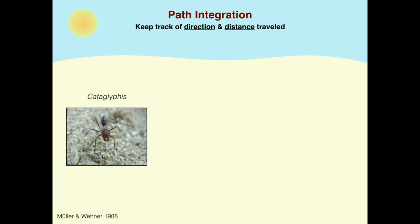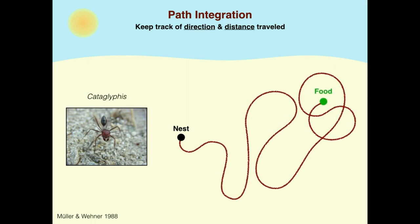This behavior has been well studied in the ant Cataglyphis, which lives in a featureless desert environment. A Cataglyphis ant will depart from its nest and wander around in search of food. Upon finding a piece of food, the ant is then able to return to the nest in a relatively straight path, demonstrating that it has integrated its location relative to its home.